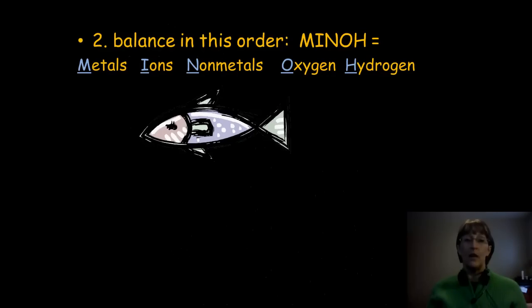All right. This is a really good little mnemonic, again, that will help you kind of choose an order to balance things in. So, if you use this MINOH, M-I-N-O-H, metals first. So, you guys all know the vast majority of the elements on the periodic table are metals. Ions, especially the polyatomic ions, that's what we're talking about here. So, metals first, polyatomic ions second, non-metals third, and then, again, save oxygen and hydrogen until last.